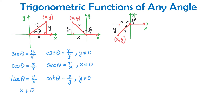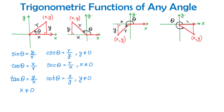Now let's look at an angle in quadrant 4. We plot a point with coordinates x and y and draw the angle in standard position with the terminal side passing through this point. Angle theta is between 270 and 360 degrees. Drawing the perpendicular forms a right triangle. In quadrant 4, x is positive, y is negative, and R is always positive. To find the trigonometric functions, we again use exactly the same definitions.